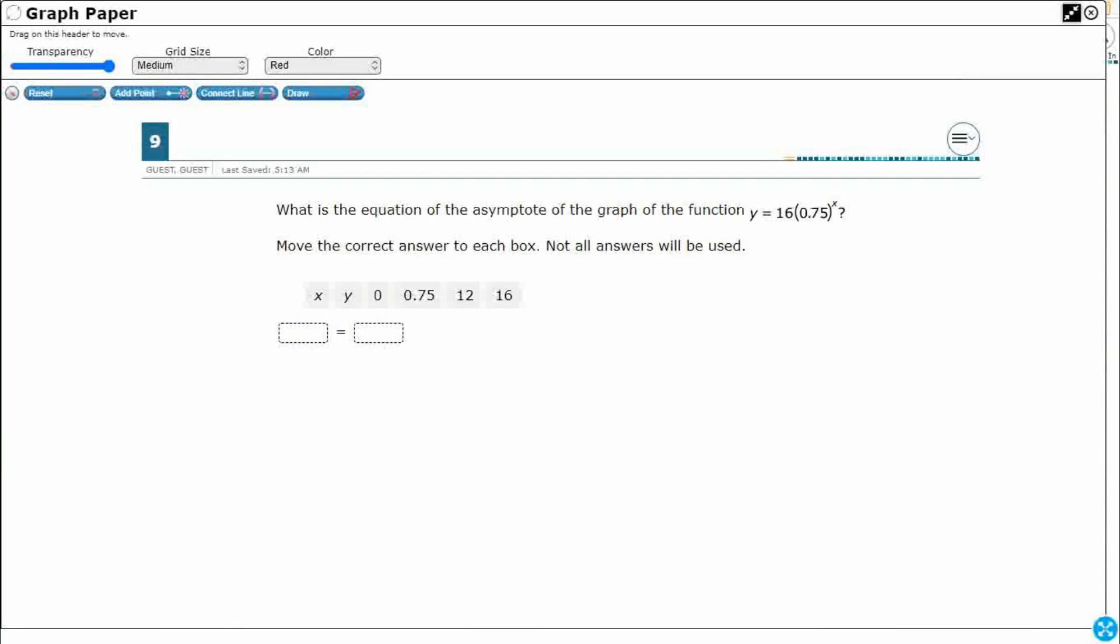We have an equation and we need to find the equation of the asymptote of this graph. Now we need to know what that is coming into the test because that's not going to show up on your reference materials.